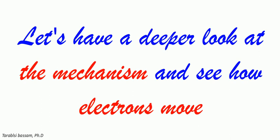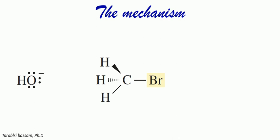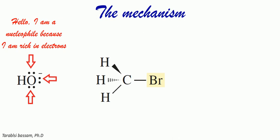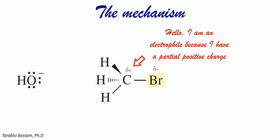Now let's have a deeper look at the mechanism and understand how electrons move. Hydroxide is rich in electrons because it has many lone pairs of electrons and a negative charge, so it is considered a nucleophile, while carbon in alkyl halide is poor in electrons because it has a partial positive charge on it, so it is considered an electrophile.